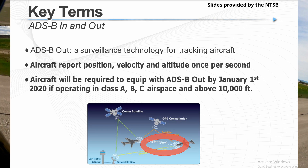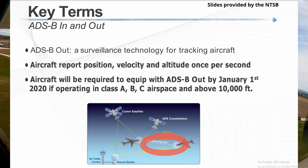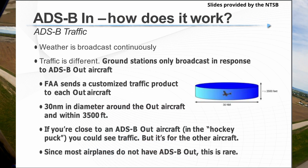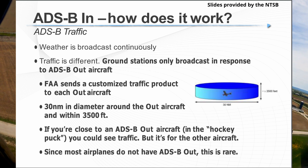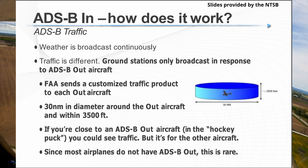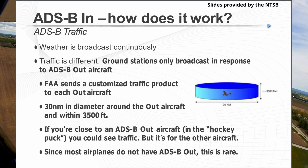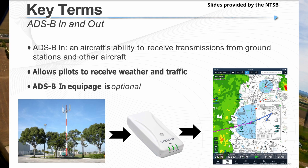Each aircraft broadcasts its own position and velocity, plus a few other parameters. The idea is that air traffic control and other aircraft receive that picture, making it easier to track surrounding aircraft and display them on an electronic flight bag or more advanced avionics. Not all aircraft can transmit ADS-B out — that requires a Mode S transponder with ADS-B out capability.